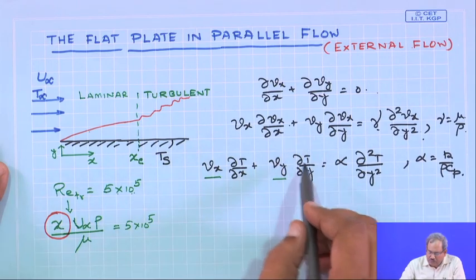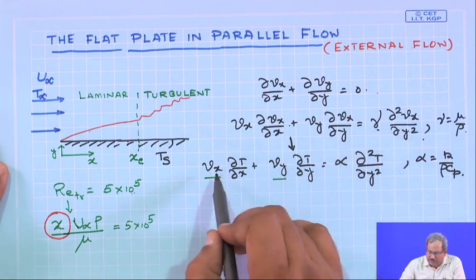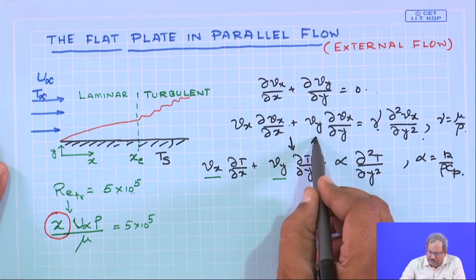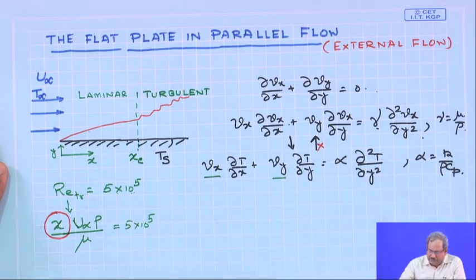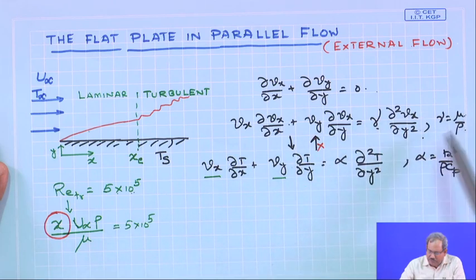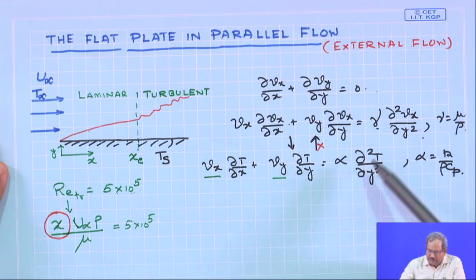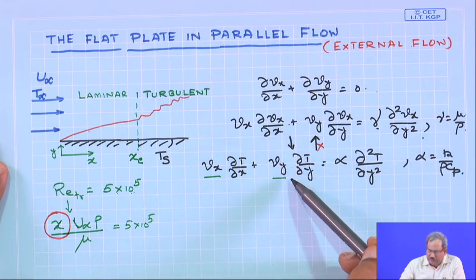The absence of temperature in the continuity and momentum equations makes them decoupled from the energy equation — there is only one-way coupling from momentum to energy. However, if physical properties μ and ρ vary significantly with temperature, coupling in the reverse direction would also exist. If μ and ρ can be treated as constant within the operating temperature range, there is only one-way coupling between the two equations.